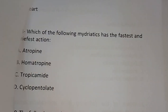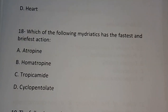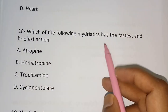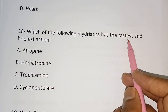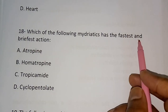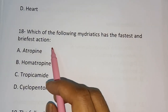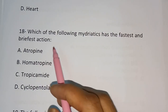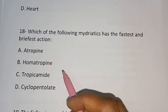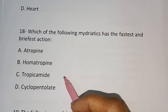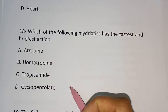Question number eighteen: Which of the following mydriatics has the fastest and briefest action? — (A) atropine, (B) homatropine, (C) tropicamide, (D) cyclopentolate. Tropicamide is the correct answer.